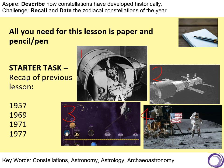Your time is up. Let's have a look through the answers. 1957 was the launch of Sputnik 2 — that was number one. 1969 links with picture number four, the Apollo 11 landing. 1971 is the Salyut 1 space station — that is number two. And that leaves the Voyager space probes from 1977. So that was just a quick recap of last lesson, which was approximately four weeks ago. Hopefully you got those right; if not, go back and have a look at that lesson again.